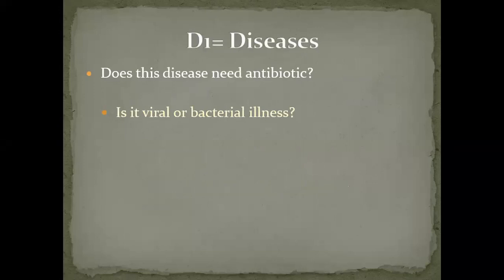The first D is disease. The foremost important question is: does this disease need an antibiotic or not? What is the underlying condition? Is it a viral or a bacterial illness? If you take the example of pneumonia, you need to know whether it is bacterial pneumonia or viral pneumonia, because there is no use of prescribing an antibiotic in a viral pneumonia — it will only increase the propensity of patients to develop antimicrobial resistance.